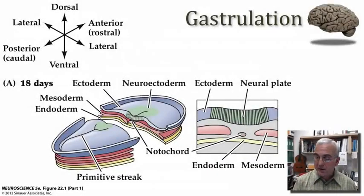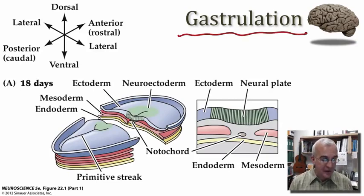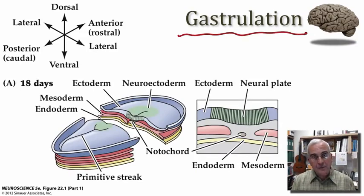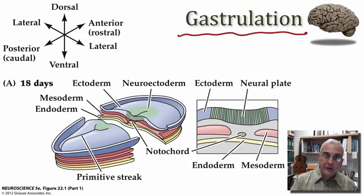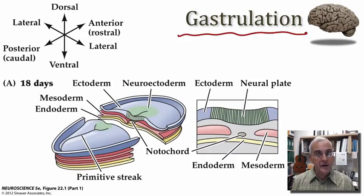The story of the developing nervous system begins with gastrulation. Gastrulation refers to an invagination of the developing embryo at a stage called the blastula. This process of invagination in the blastula produces three principal germ layers: the ectoderm, the most outer layer; the mesoderm, which is the middle layer; and the endoderm, which is the inner of these three layers. This is a fundamental event in the developing embryo and sets the stage for the formation of the nervous system.